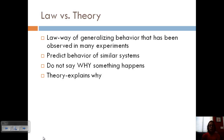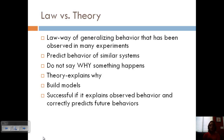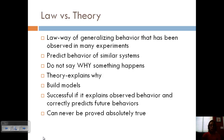A theory explains why, and so we can use a theory to build models. A theory is successful if it explains the observed behavior and then correctly predicts future behavior — so it's kind of one step above a law. It predicts the behavior and also explains why.